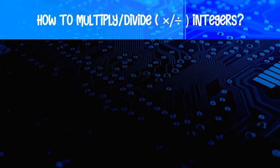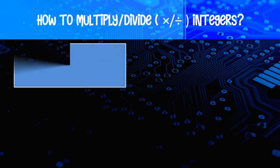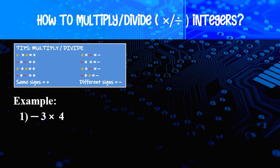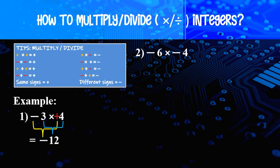How to multiply or divide integers. The tip is: same sign gives a positive answer — positive times positive, or negative times negative is positive. Different sign gives a negative answer. Example: negative 4 times negative 3 times 4. Negative times negative is positive, then positive times positive — so look sign by sign. 3 times 4 equal to 12, and the answer is negative 12. Another example: negative 6 times negative 4 — negative negative is positive — 6 times 4 equal to 24, so the answer is 24.